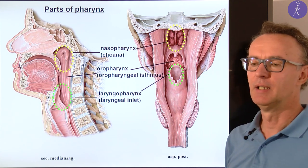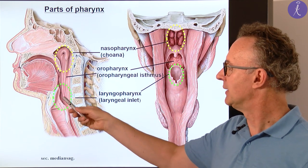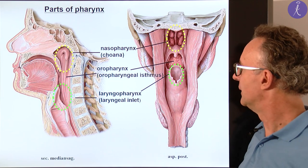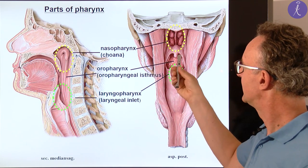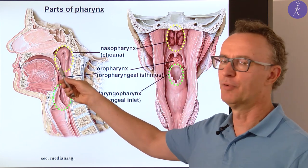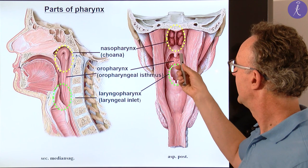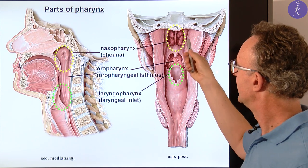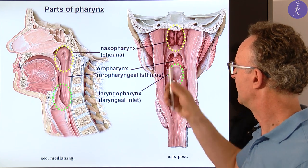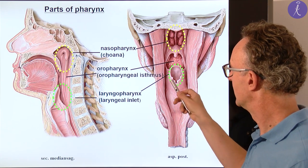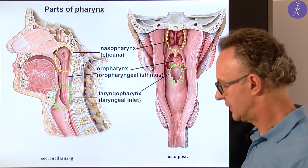In clinical practice we may use other terms for these three: the epipharynx, the mesopharynx, and hypopharynx according to the levels. The best way to orient yourself is to find the soft palate with the uvula first. Then you can recognize the epipharynx or nasopharynx above, the mesopharynx or oropharynx below with the root of the tongue, and the laryngeal part showing the laryngeal inlet — the laryngopharynx.